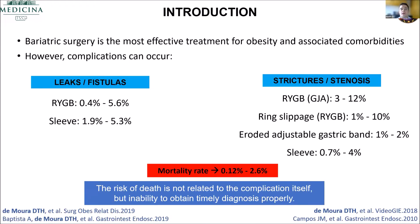Bariatric surgery, as everyone knows, is the most effective treatment for obesity and associated comorbidities. However, complications such as leaks, fistulas, and strictures can occur in about 5% in general. In centers of expertise, this rate is lower.